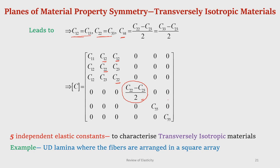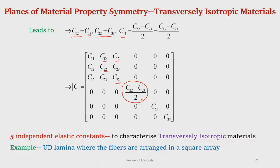As a consequence of one plane of transverse isotropy, the number of independent elastic constants reduces from 9 to 5. For a transversely isotropic material we need 5 independent elastic constants. An example is a unidirectional lamina where fibers are arranged in a square array — in the 2-3 plane the properties are the same in direction 2, direction 3, or any other direction, making it a plane of transverse isotropy.